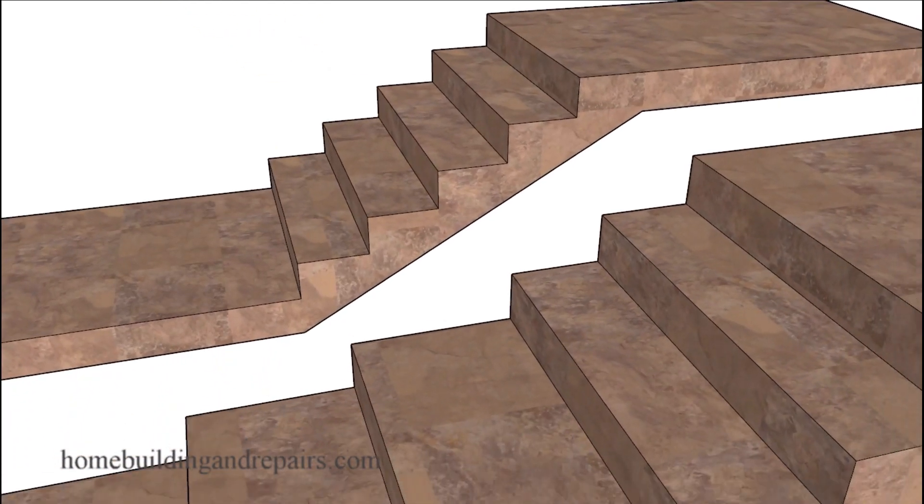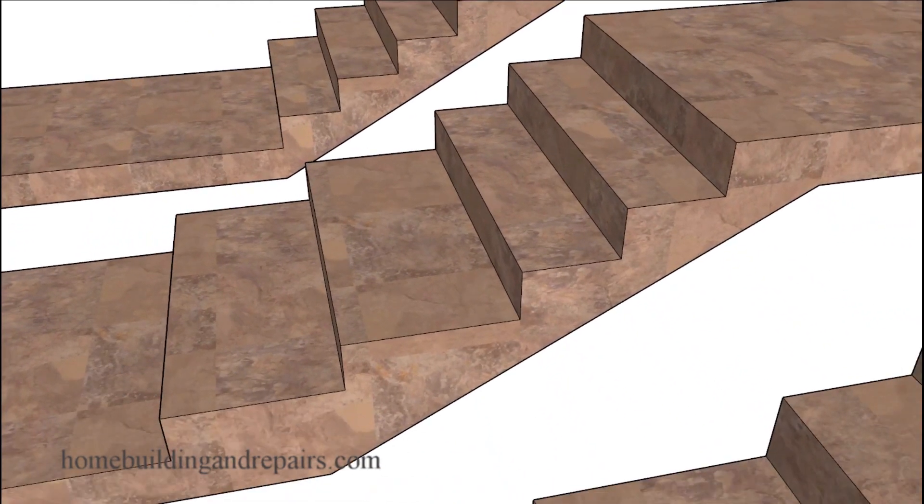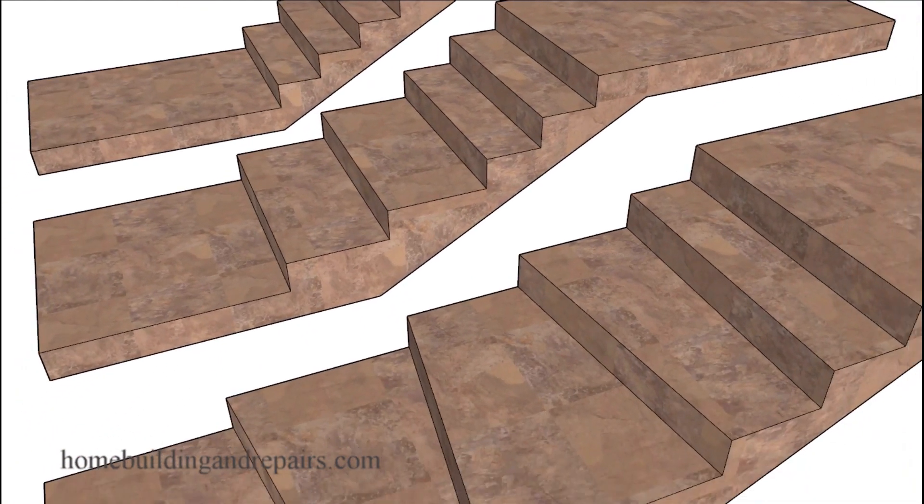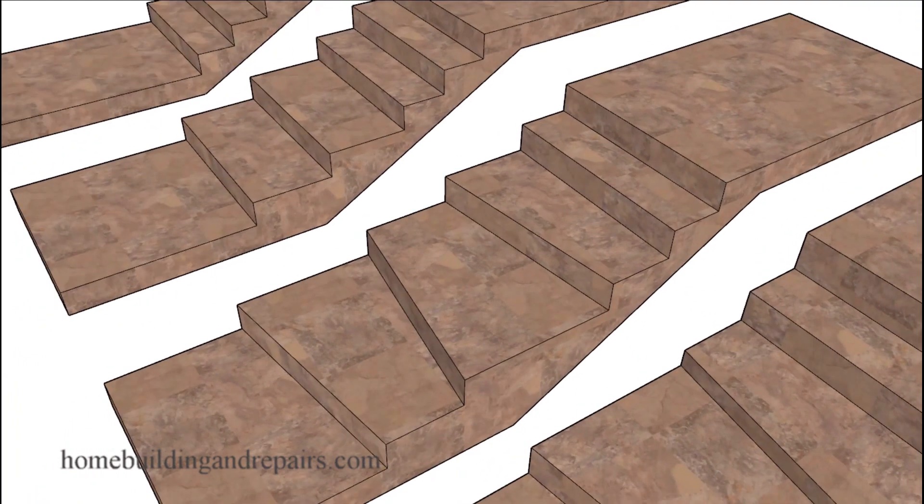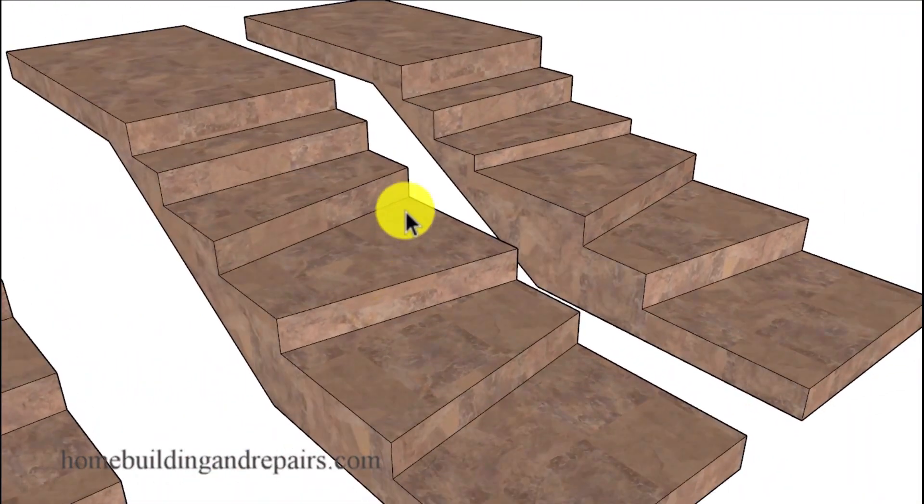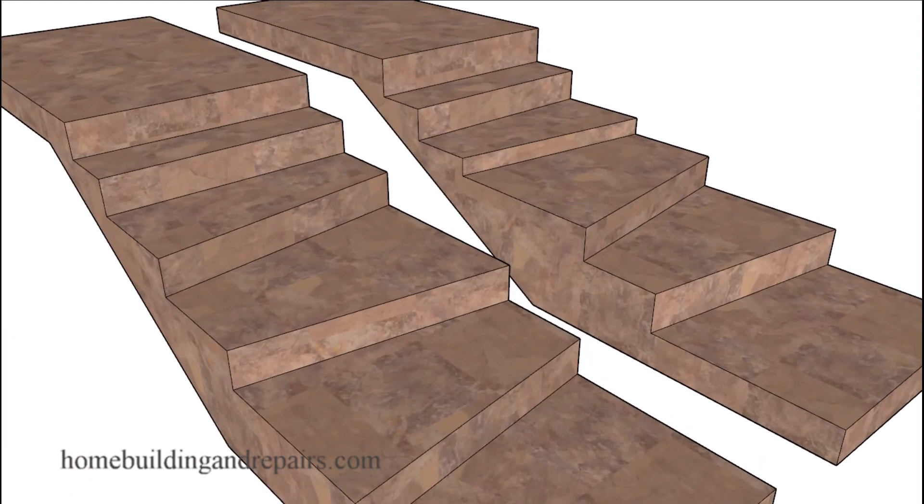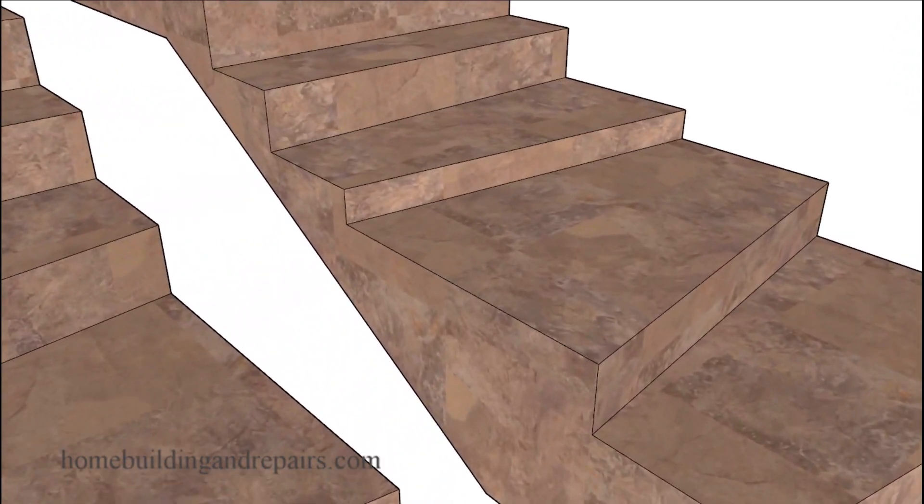So why do we want to make it more difficult for someone to walk up and down by making wider steps that aren't the same size as the other steps, or by creating some type of irregular shaped tread, or making matters even worse by not just having an irregular shaped tread but irregular or different sized risers to make it even more difficult for someone to walk up and down the stairway.